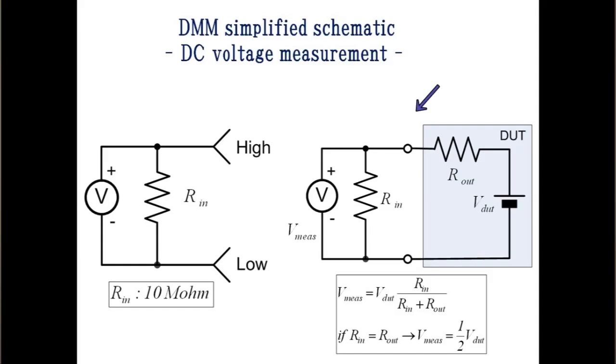The figure on the right side shows this case. Measured voltage is divided voltage by R in and R out. When R in and R out are the same, measured voltage becomes half of DUT's voltage.